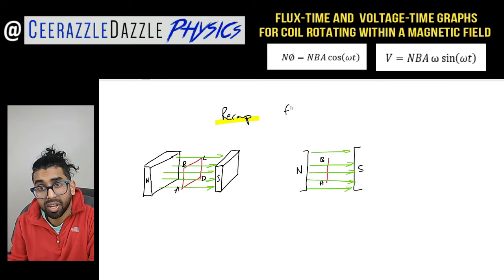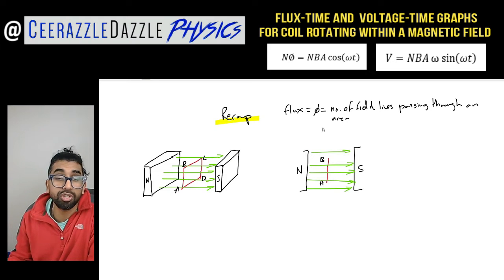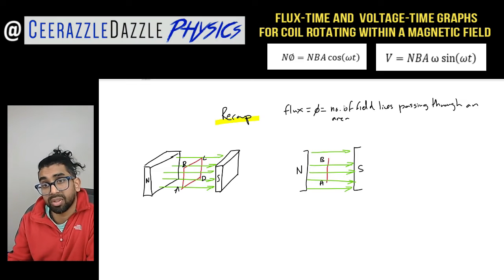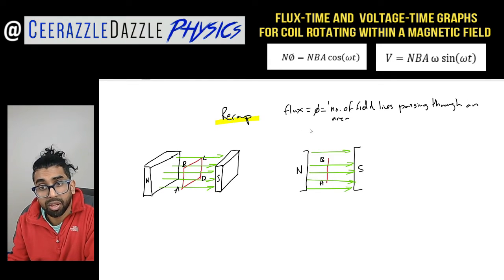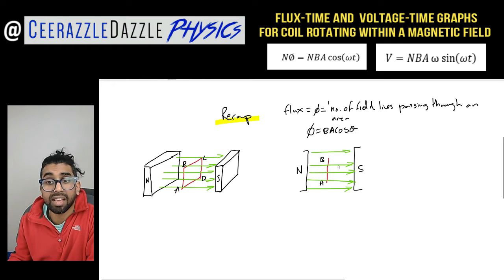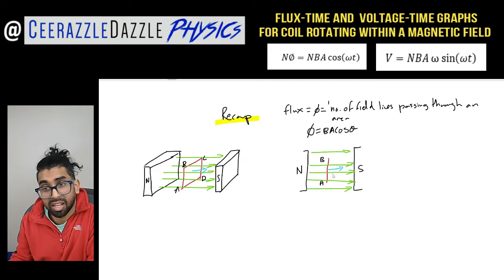If you've forgotten, flux has the symbol phi, which equals the number of field lines passing through an area. You can imagine it as the number of field lines threading through the loop. In terms of a formula, hopefully you remember that phi is equal to B A cos(θ), where θ is the angle between the normal to the surface and the field.